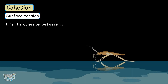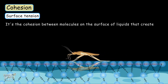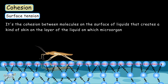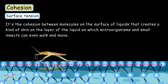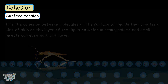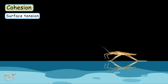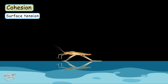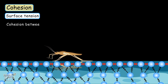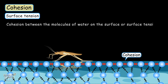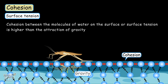Now let's learn what surface tension is. It is the cohesion between the molecules on the surface of liquids that creates a layer of liquid like a skin, on which microorganisms and small insects can walk and move. Cohesion between the molecules of water on the surface — the surface tension — is higher than the attraction of gravity on these insects, which is why they are able to walk on the surface of water. The layer of water molecules strongly attracted to each other forms a layer strong enough to carry the weight of these small insects.